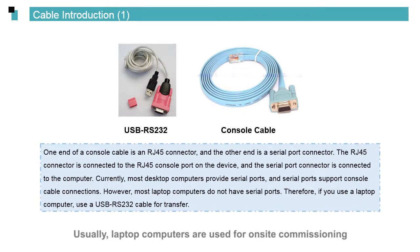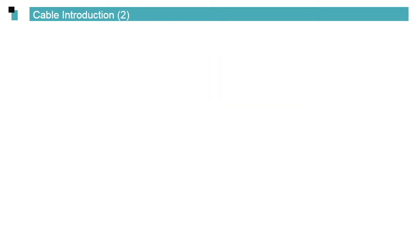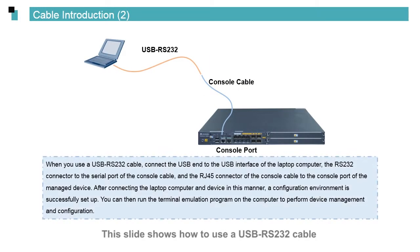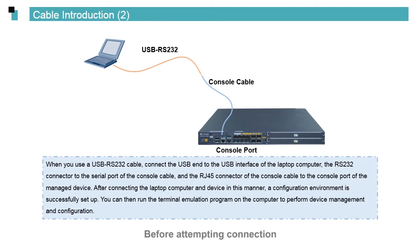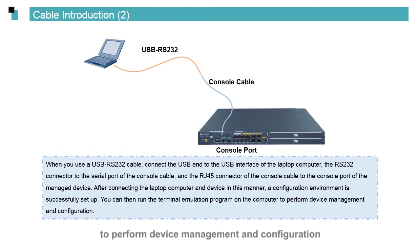Usually, laptop computers are used for on-site commissioning. They do not have any chassis and therefore require a USB RS-232 cable to connect the computer and console cable. This slide shows how to use a USB RS-232 cable to connect the computer and device. Before attempting connection, install the required driver on the computer. After completing preliminary environment setup, run the terminal emulation program on the computer to perform device management and configuration.